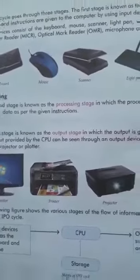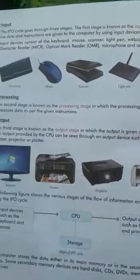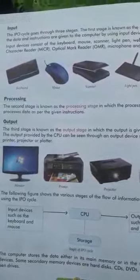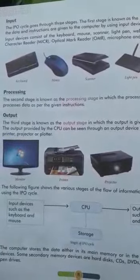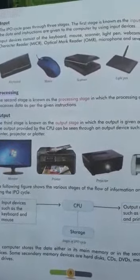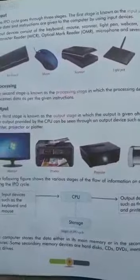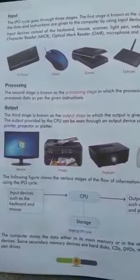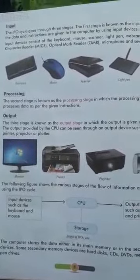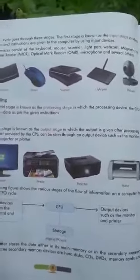Now we discuss about processing. The second stage is known as the processing stage, in which the CPU processes the data. The third stage is known as the output stage, in which the output is given after processing.